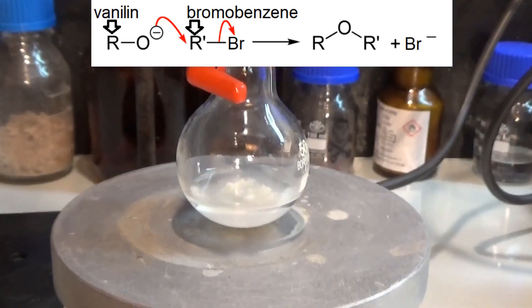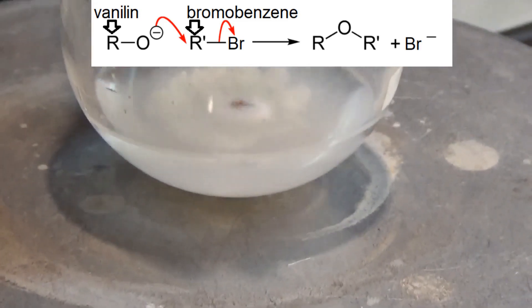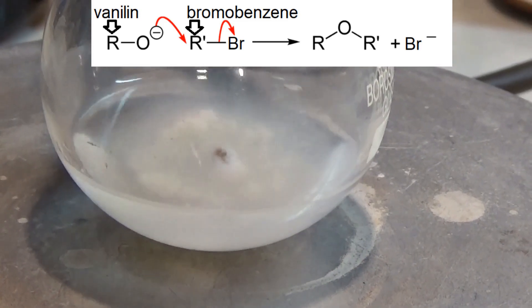So now we are ready to stopper the flask and start stirring. The reaction mixture is stirred for three hours to ensure that we have a good yield.